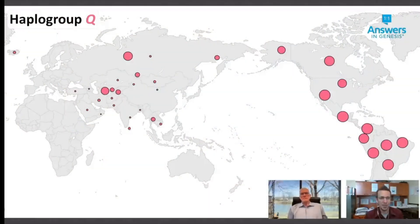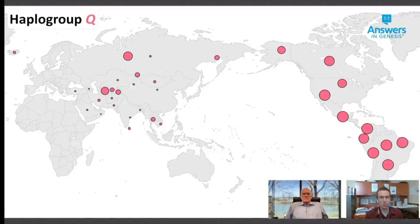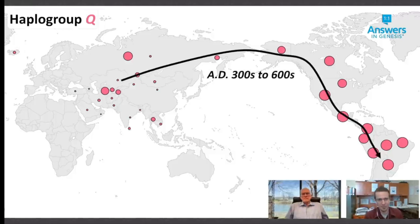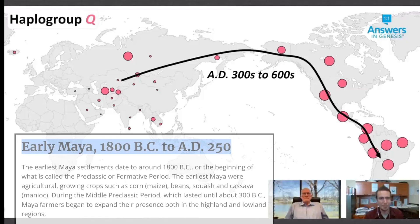I still haven't told you at what time the Native Americans — or I should say this branch Q — arrives in the Americas. So you run all this analysis, and branch Q arrives in the AD 300s to 600s, not 15,000 years ago — 300s to 600s. Now we're going to unpack what this means here momentarily.